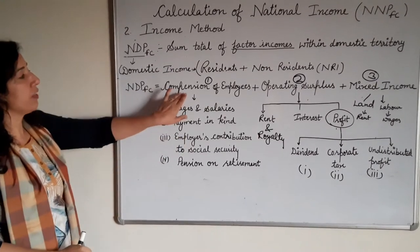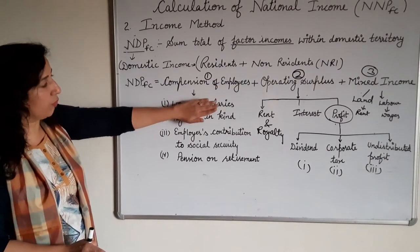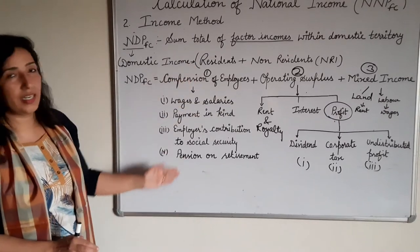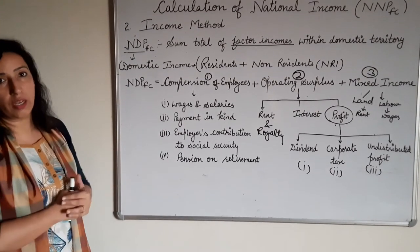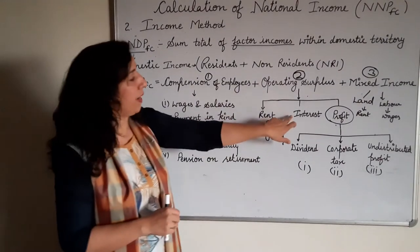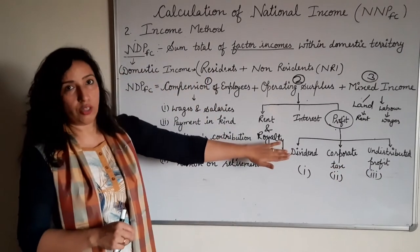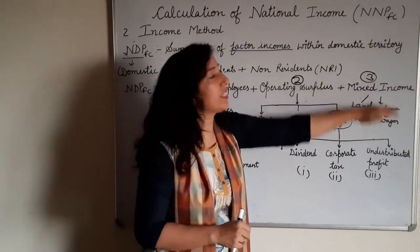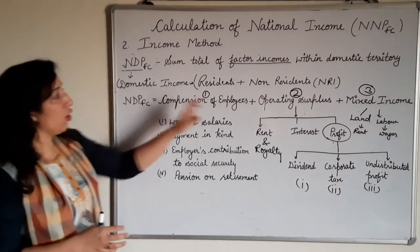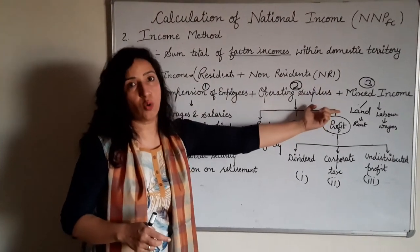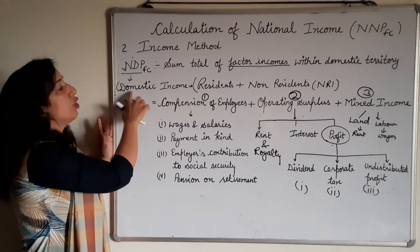So, income method calculates Net Domestic Product at Factor Cost as follows: first, find compensation of employees (directly given or via sub-heads); second, calculate operating surplus — rent and royalty plus interest plus profit (if profit not given, use its three sub-heads: dividend, corporate tax, undistributed profit); third, add mixed income. Adding all these factor incomes gives you Net Domestic Product at Factor Cost, which is also called the domestic income of the country.